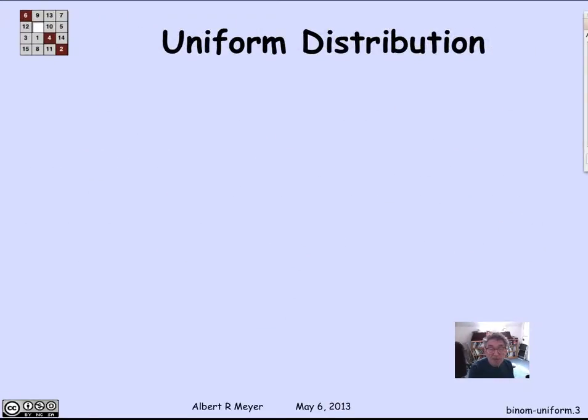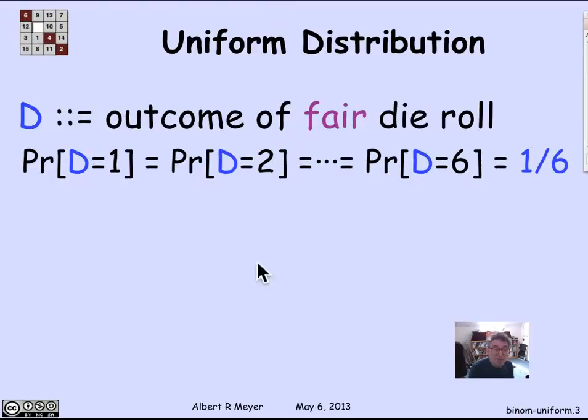Other examples that come up: if D is the outcome of a fair die roll, dice are six-sided, so the probability that it comes up 1 or 2 or 6 is 1/6 each.